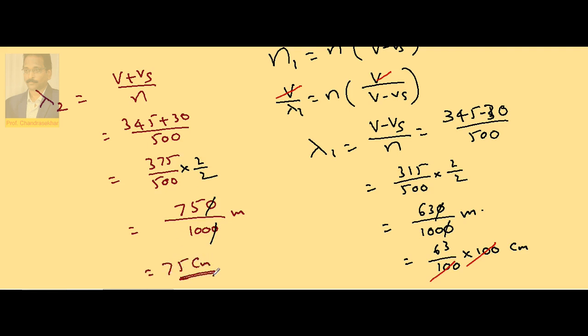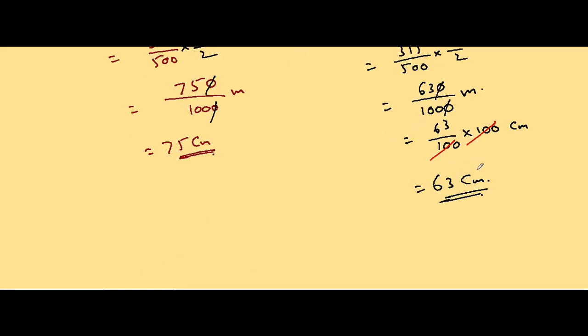The wavelength perceived by the person standing behind is 75 centimeters, whereas the wavelength perceived by the person standing in front is 63 centimeters.